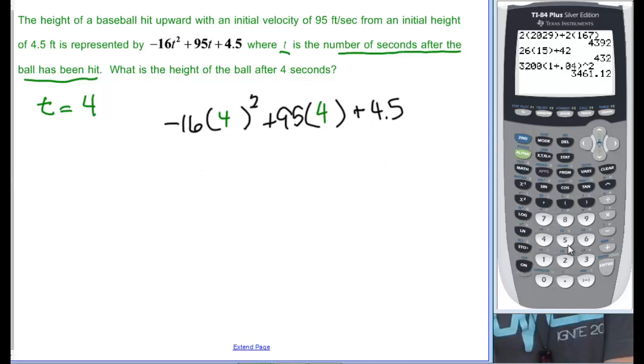And again, just go right to your calculator. Most people would anyway. It's not really cheating if we had to pay for it. So, caret 2, plus 95, times 4, I'm just going to do multiplication in parentheses, plus 4.5, and enter. And we find out that it is 128.5.